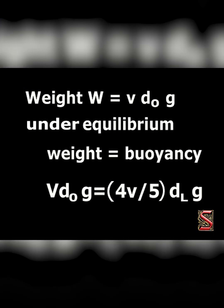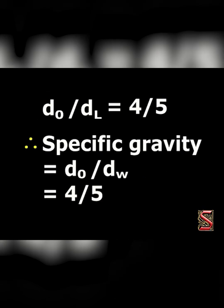In such a case, V into density of object into g is equal to (4V/5) into density of liquid into g. Therefore, density of object divided by density of liquid is equal to 4/5. Hence the specific gravity is equal to d_O by d_W, which is equal to 4/5.